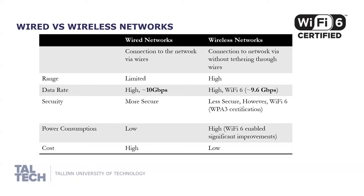Wired communication is based on wires, which means we have limited operation but can achieve a higher data rate. However, we can achieve around 9.6 Gbps with Wi-Fi 6, and we would not need wires, while also having a higher range. We can create meshes of devices. Wired networks are more secure, but with Wi-Fi 6 we have WPA3 certification, meaning we have higher security there as well.